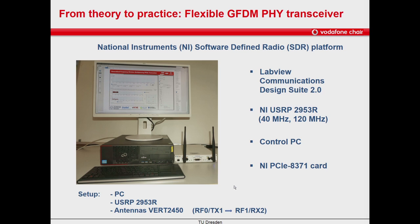In this tutorial, we consider a basic setup consisting of a control PC, one USRP acting as a transmitter and a receiver, and antennas for the transmission over the air.